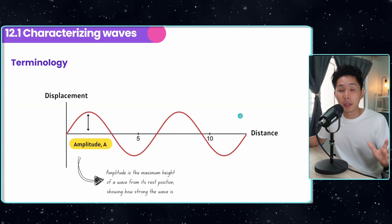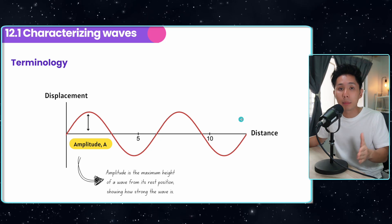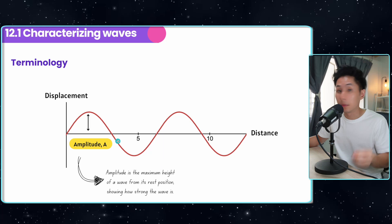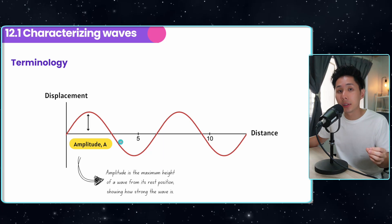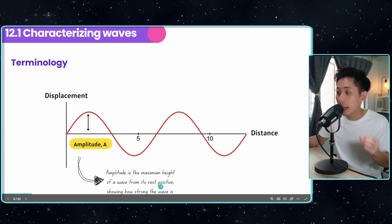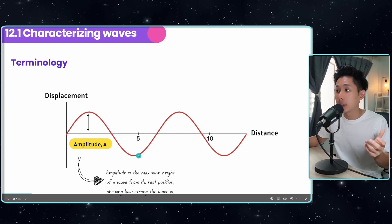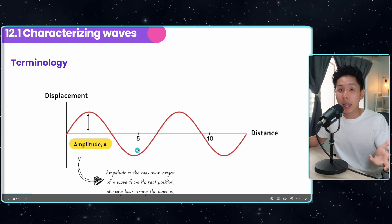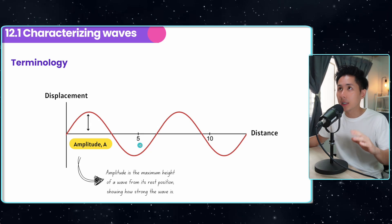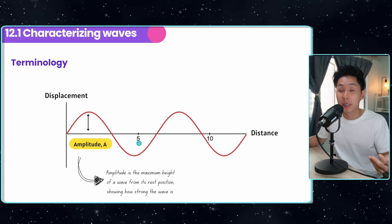Here are a few terms you need to know about waves; they will help you understand the topics in the following sections. First, amplitude: the maximum height of a wave from its rest position, showing how strong the wave is. A light wave with high amplitude will have higher intensity, and a sound wave with high amplitude will have a louder volume.